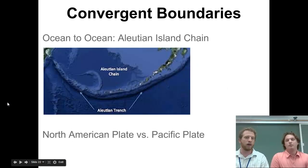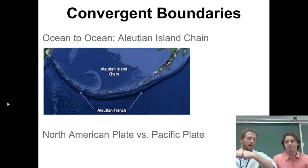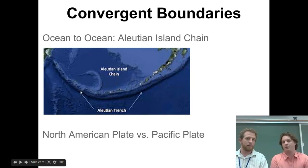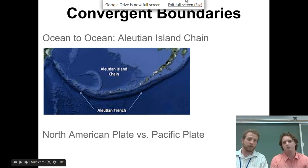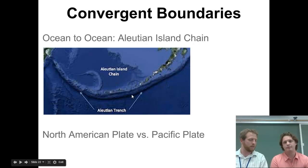Last one - two oceanic plates running into each other. They're both dense, but one is more dense and dips underneath. It melts and forms volcanic islands. That's the Aleutian Island chain off the coast of Alaska. This process is still happening. Over time, if we're still melting rocks and making volcanic islands, they'll eventually start to connect.